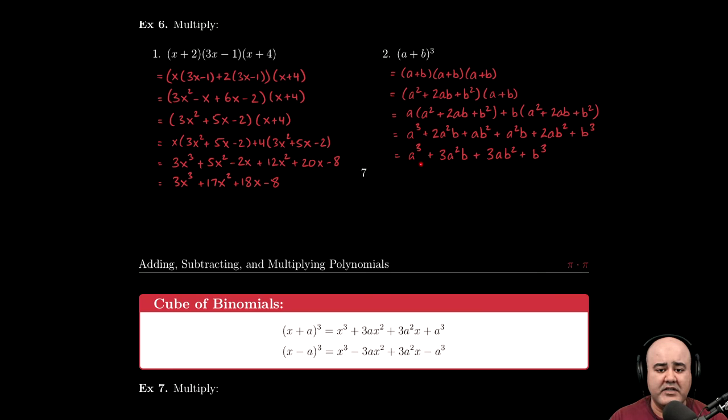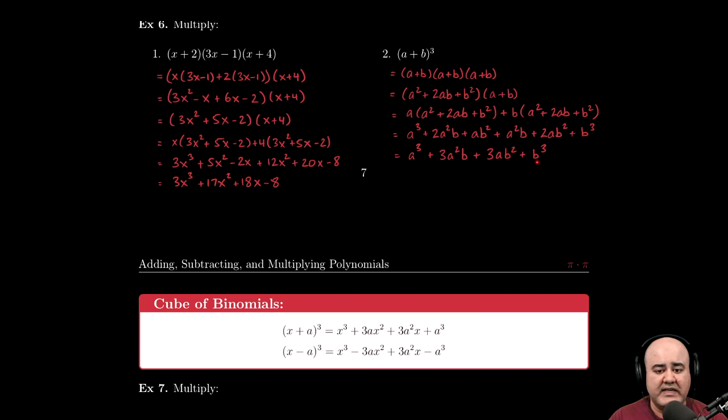So again, cube the first term, 3 times square the first times the second, plus 3 times the first times square the second, plus cube the second. And if this had been a minus in the middle, then the signs would just alternate, so plus, minus, plus, minus.